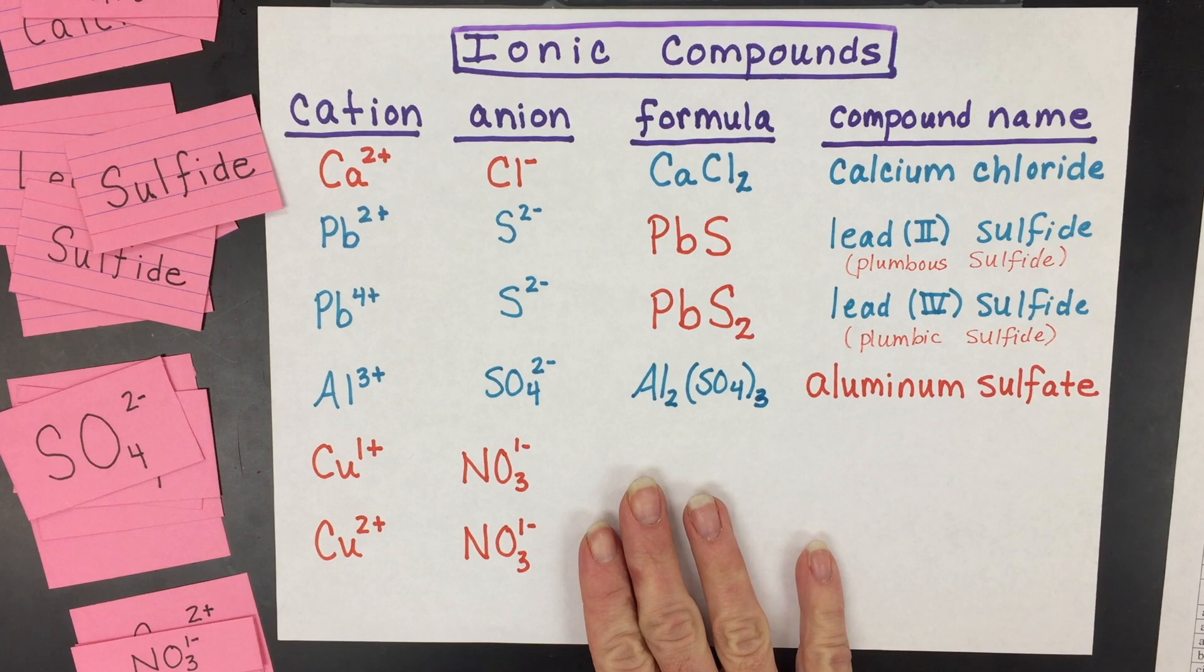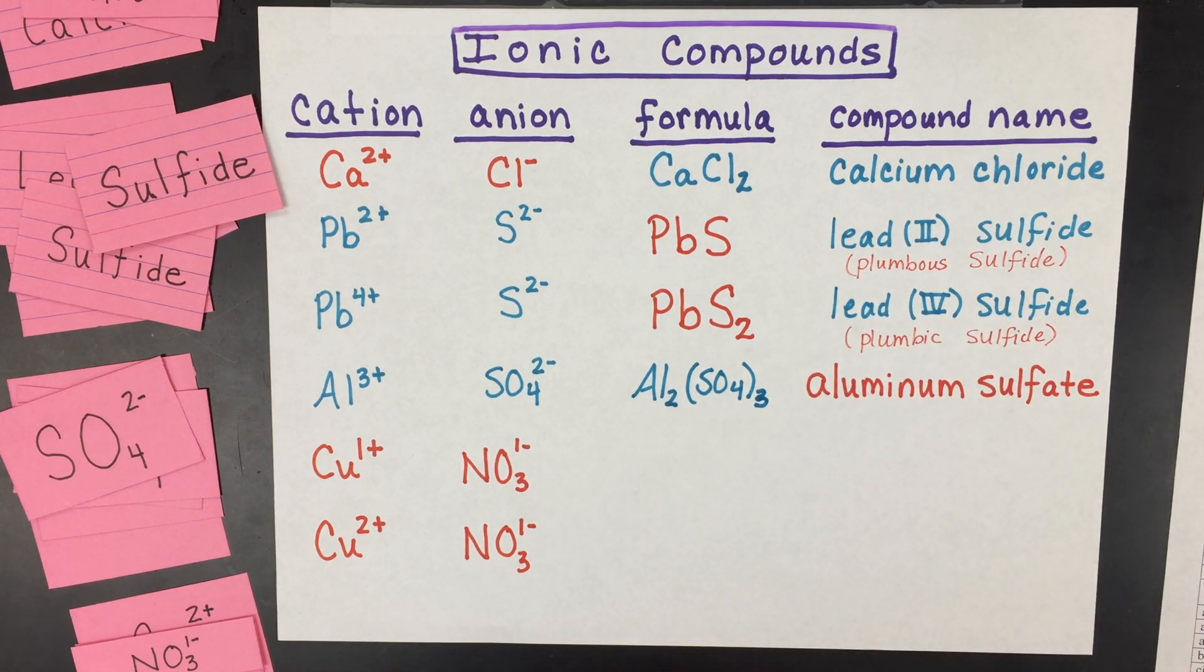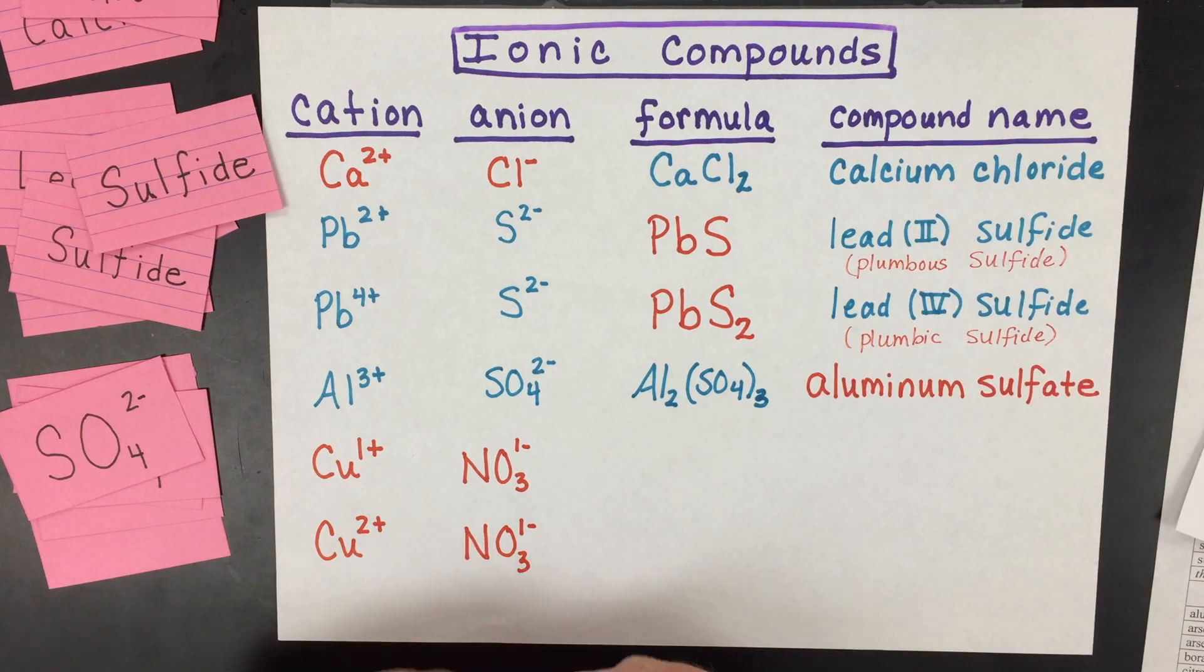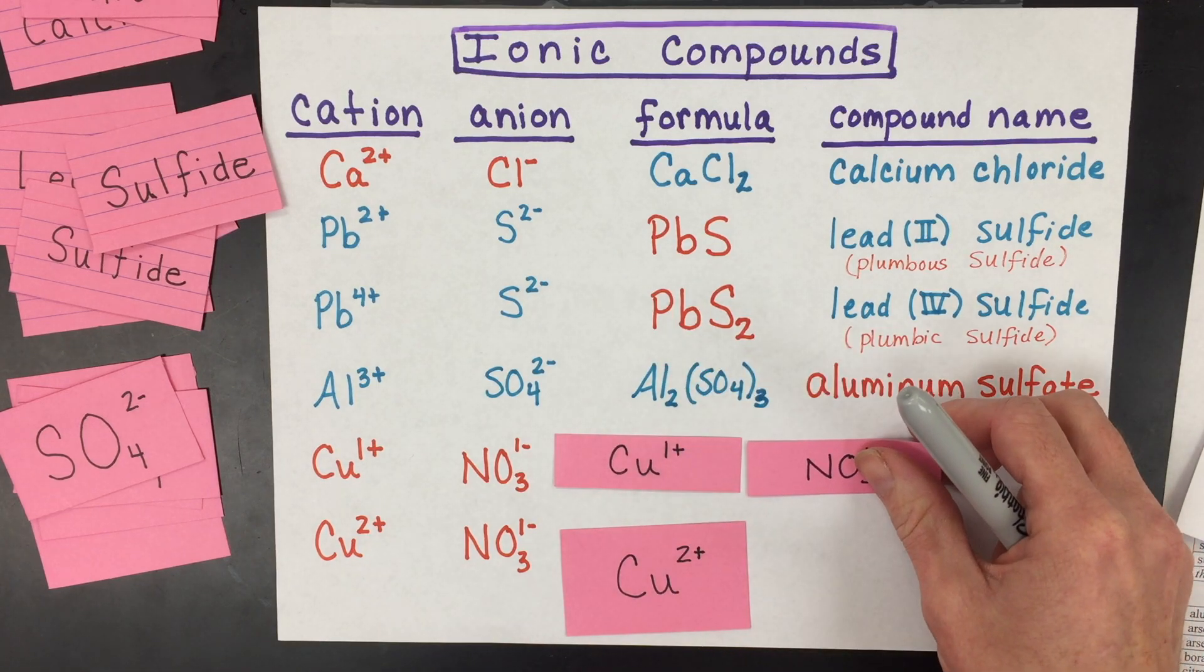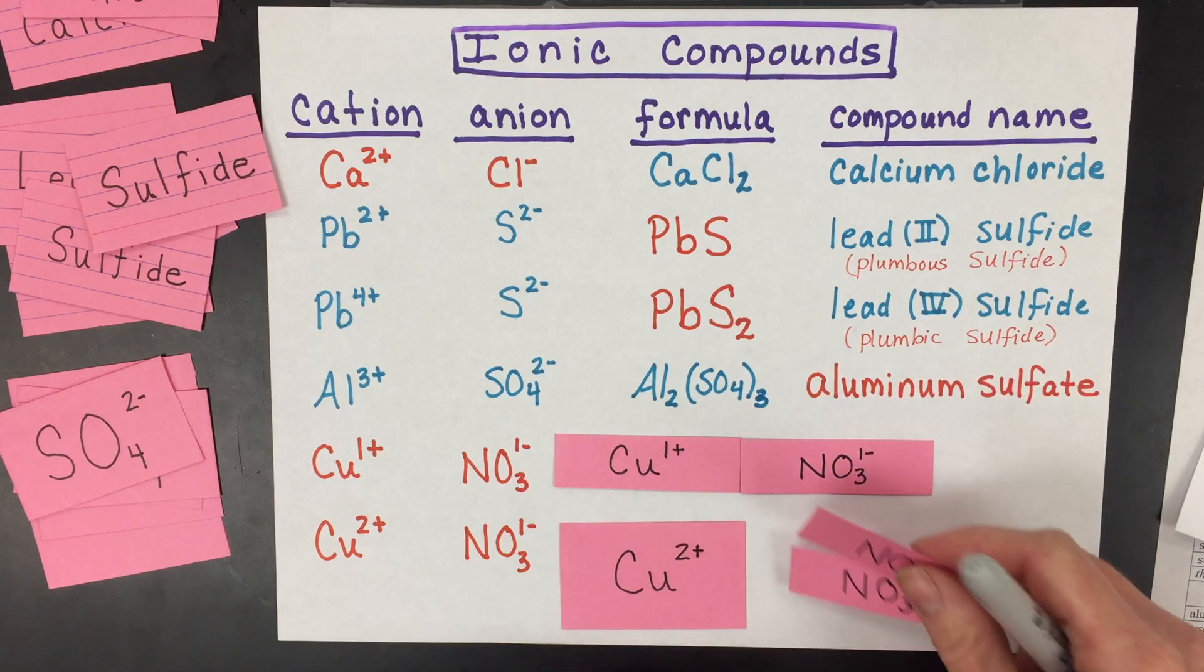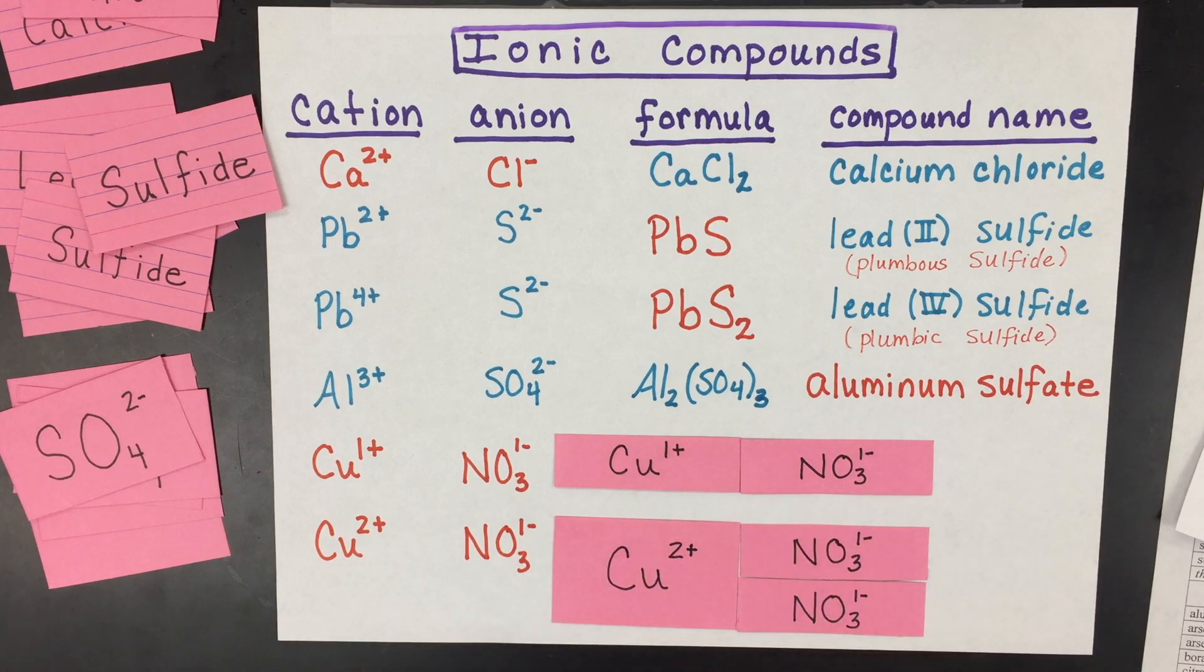This next example includes parentheses and some metals with two charges. So if you'd like to give that a try before I do that one, I'm going to pause for a second. In this case, we have copper which is two plus and we have copper which is one plus. So for the one plus ion, we only need one nitrate, but for the two plus ion, we need two nitrates. This makes two different possible compounds because of the different charges of the copper.